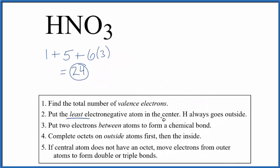We'll put the least electronegative atom at the center, and hydrogen always goes on the outside. So we'll put nitrogen in the center with three oxygens around and one hydrogen.